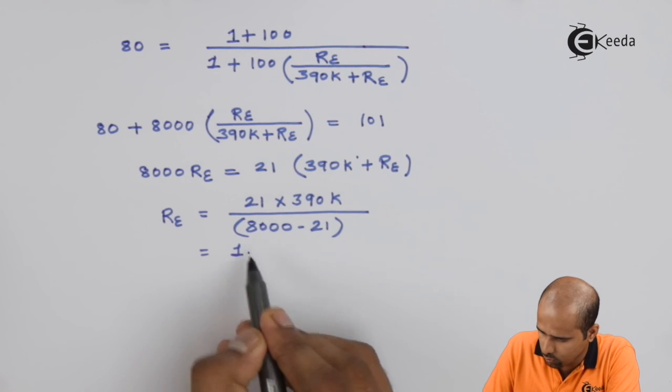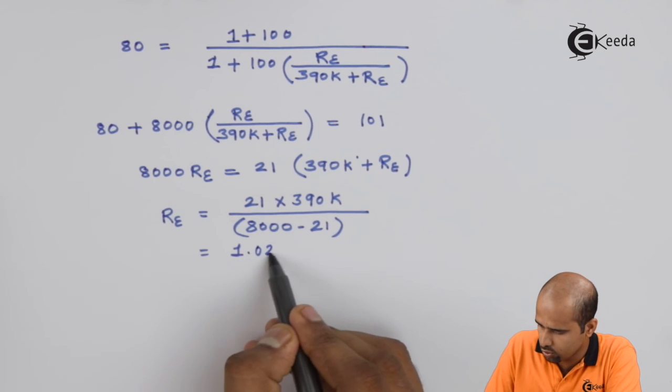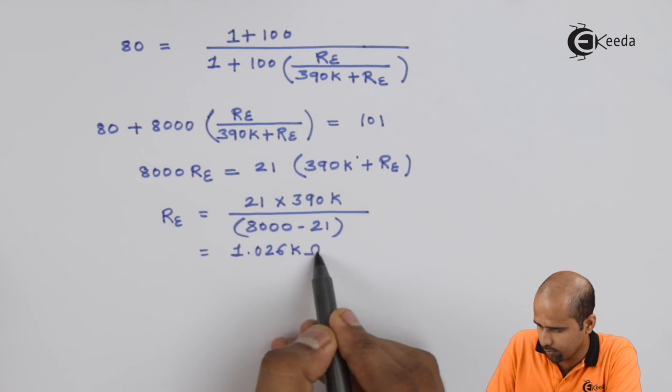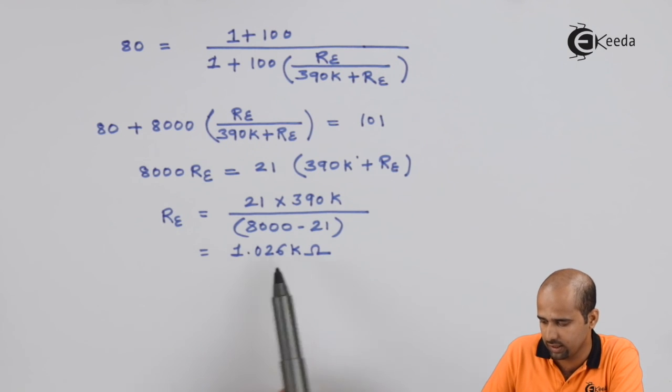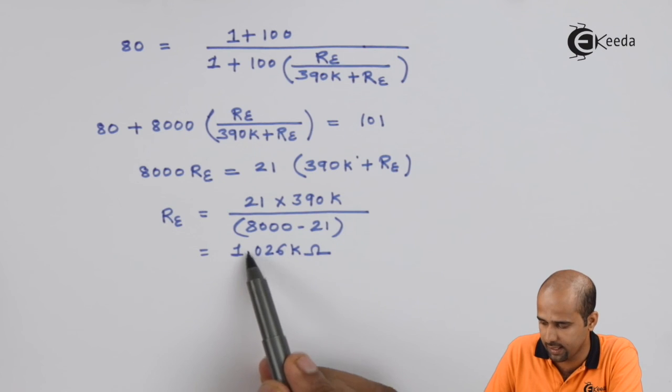The value of RE is coming out to be 1.026 kilo ohm. So to have stability factor near about 80, I have to insert resistance RE equal to 1 kilo ohm, I can say.